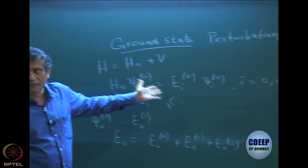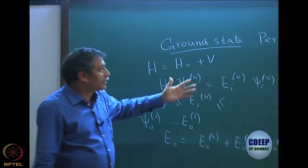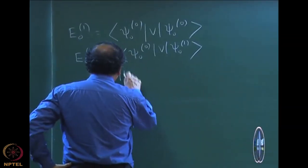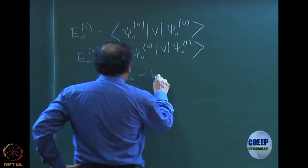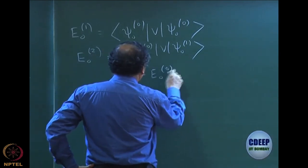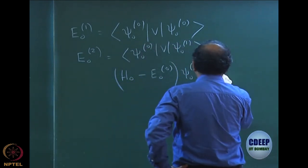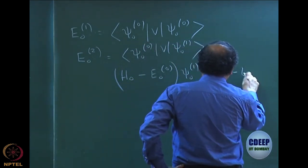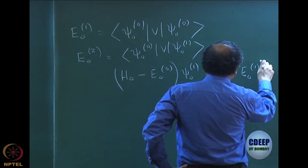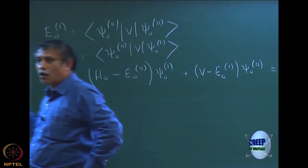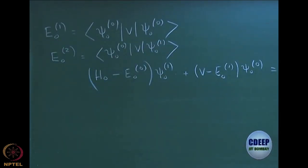The eigenfunctions of H0 are ψ00, etc. ψ01 is something we have to find out. To do that, I remind you the two equations we wrote: the first order perturbation equation, which involves ψ01 — the thing we have to find — plus V minus E01 times ψ00 equals zero. This is the first order perturbed Schrödinger equation, H minus E times ψ equal to zero.